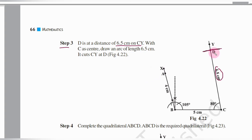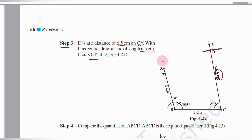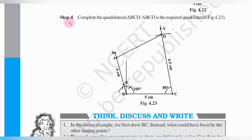In step 3, D is at a distance of 6.5 centimeters on CY. From C, draw an arc of radius 6.5 centimeters. This arc cuts ray CY at point D — that point is point D. With C as center, draw an arc of length 6.5 centimeters; it cuts CY at D. Now join points A and D. The quadrilateral ABCD is complete. Step 4: Complete the quadrilateral ABCD. Join A to D — ABCD is the required quadrilateral.